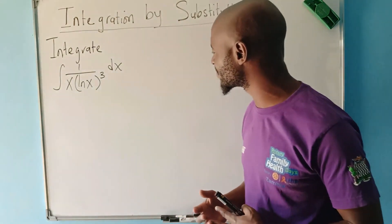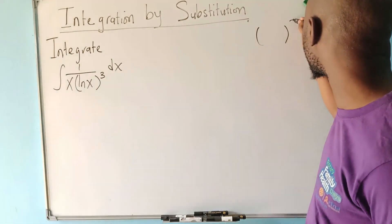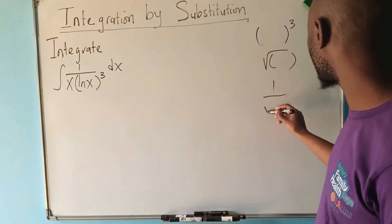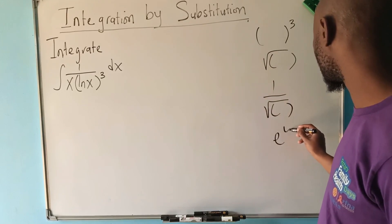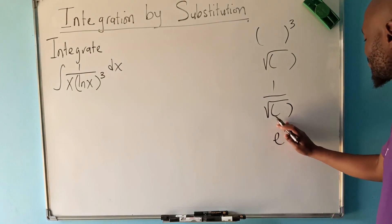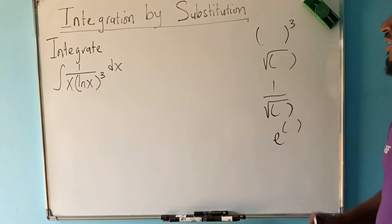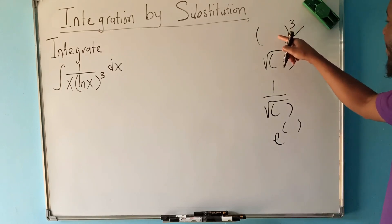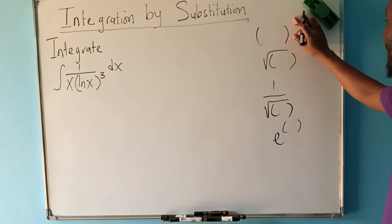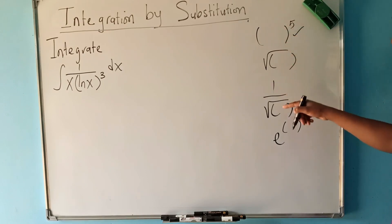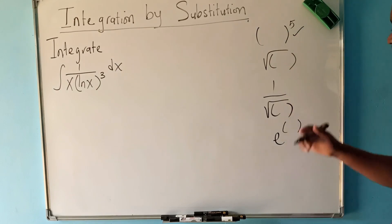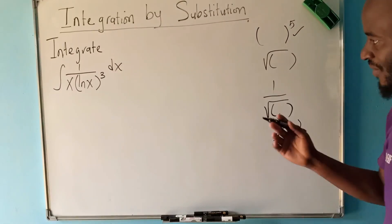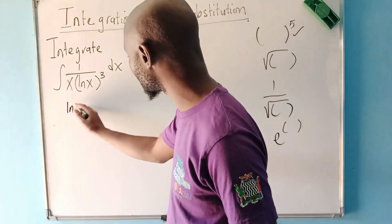Which one are you going to choose to be your u? Normally, you choose something that appears raised to a power, like a cube or a square root, something like one over a square root, or e to the power of something. These are the ones you make to be your u. From here we can clearly see we have something raised to a power — it may not be three, it could be any power — and these are the ones you make to be your u.